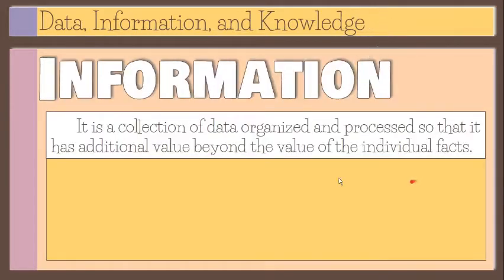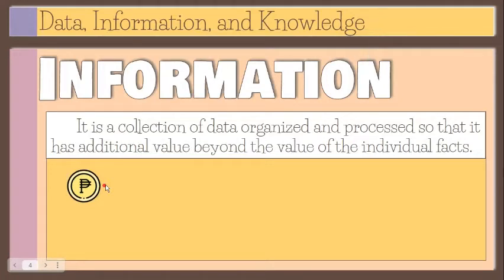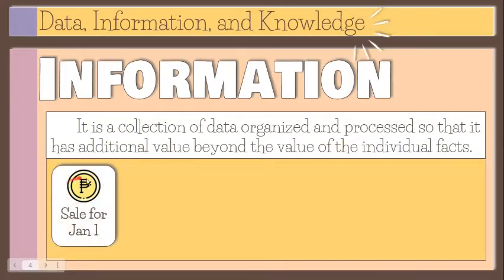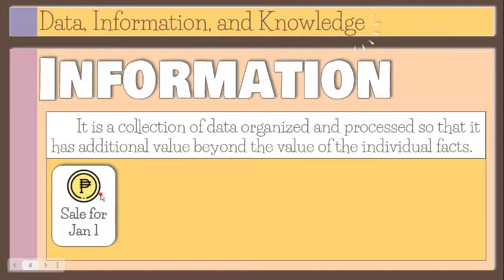Information is defined as a collection of data organized and processed so that it has additional value beyond the value of the individual facts. For example, a certain peso value — if that value is said to be the sale for January 1, it becomes information. There is a clear context and meaning applied to that data. The value of information depends on how it helps decision makers achieve their organization's goals.